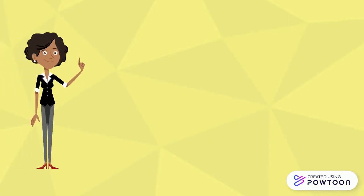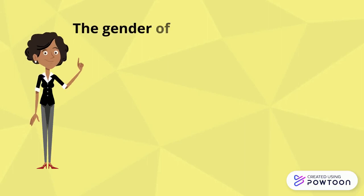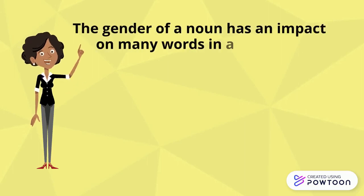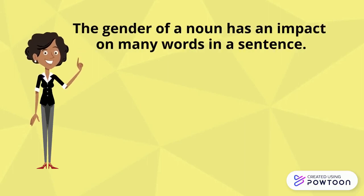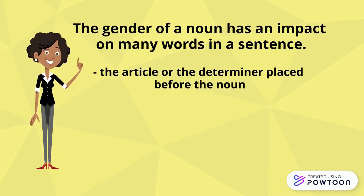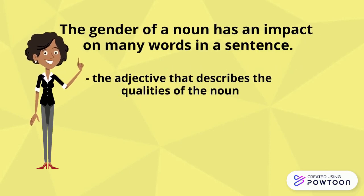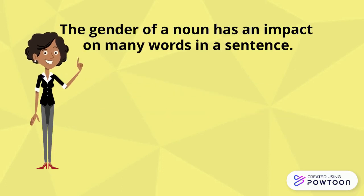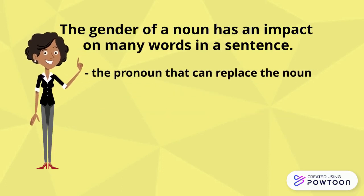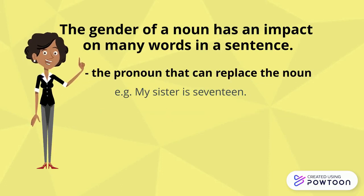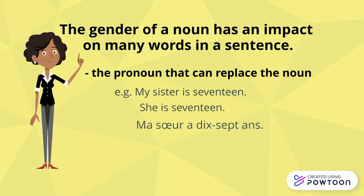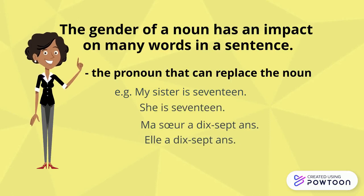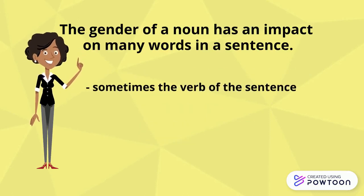Knowing the gender of a noun is very important because it is going to have an impact on many words in a sentence: the article or the determiner placed before the noun, the adjective that describes the qualities of the noun — for instance, 'my friendly sister' or 'my big sister' — the pronouns that can replace the noun — for instance, 'my sister is 17, she is 17,' 'ma sœur a 17 ans, elle a 17 ans' — and sometimes the verbs of the sentence.